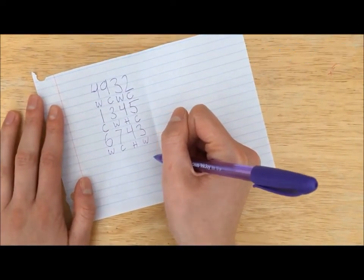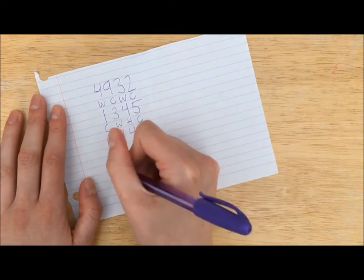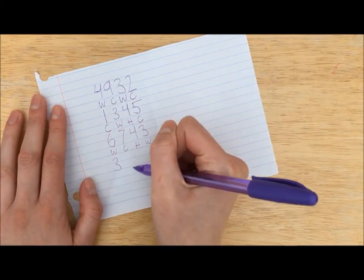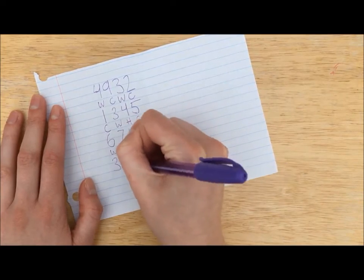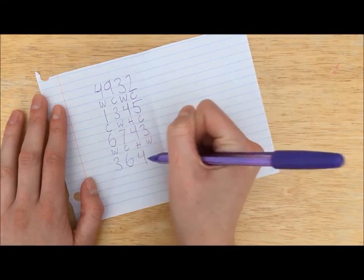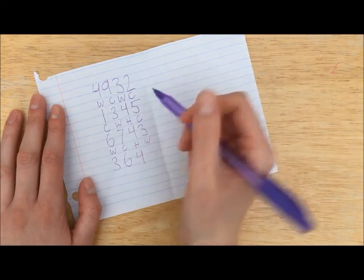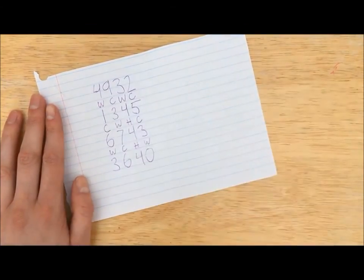The only place that the 3 has not been in is the thousands place, so she knows it goes there. She moves the 6 to the hundreds place, keeps the 4 in the tens place, and looks back to see which digit she has not tried yet. She decides to try a 0 in the ones place.